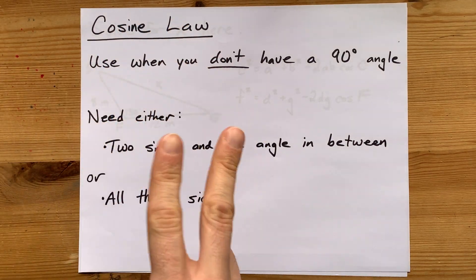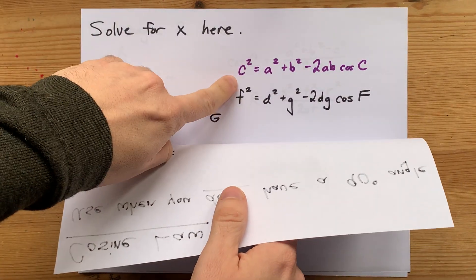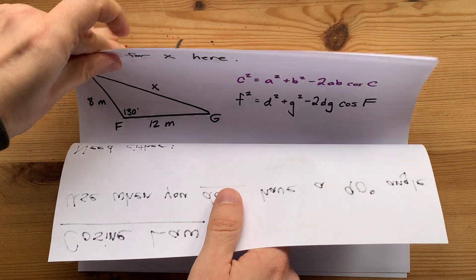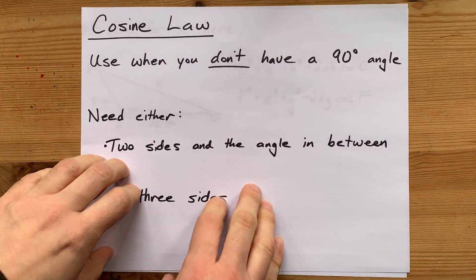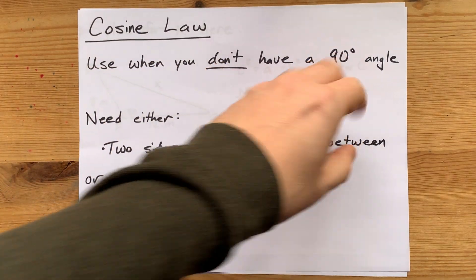The cosine law comes in two forms. One version is used when you're looking to calculate a side length, and the same formula rearranged is used when you're looking to calculate an angle inside a triangle. You'll use this law when you don't have a 90-degree angle in the triangle.